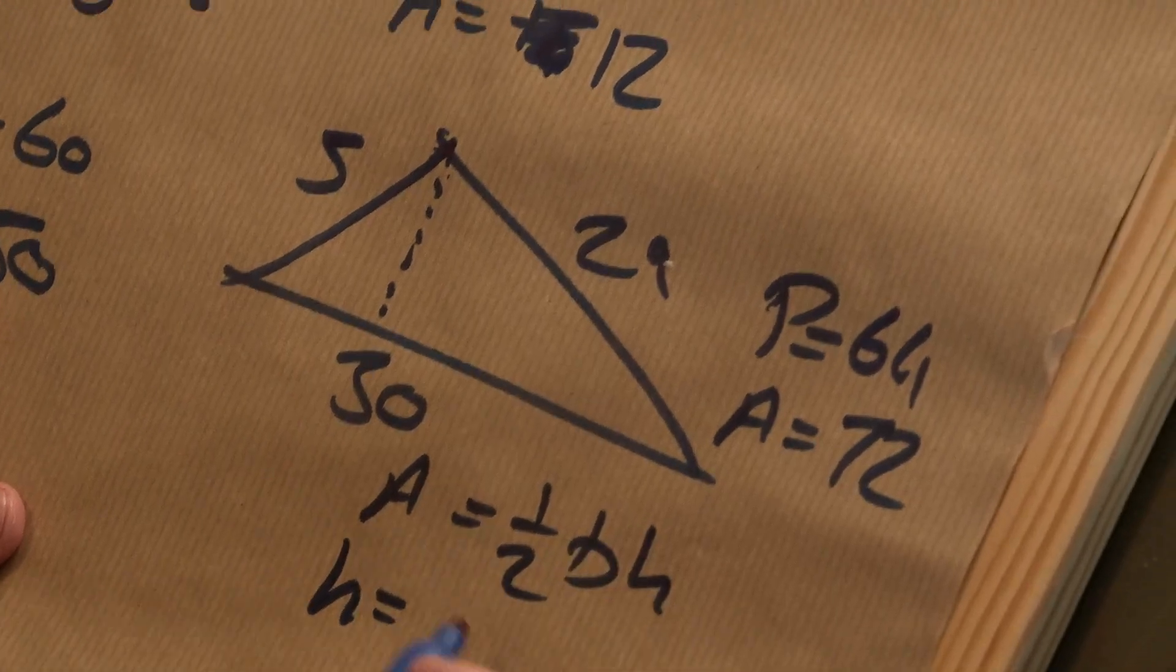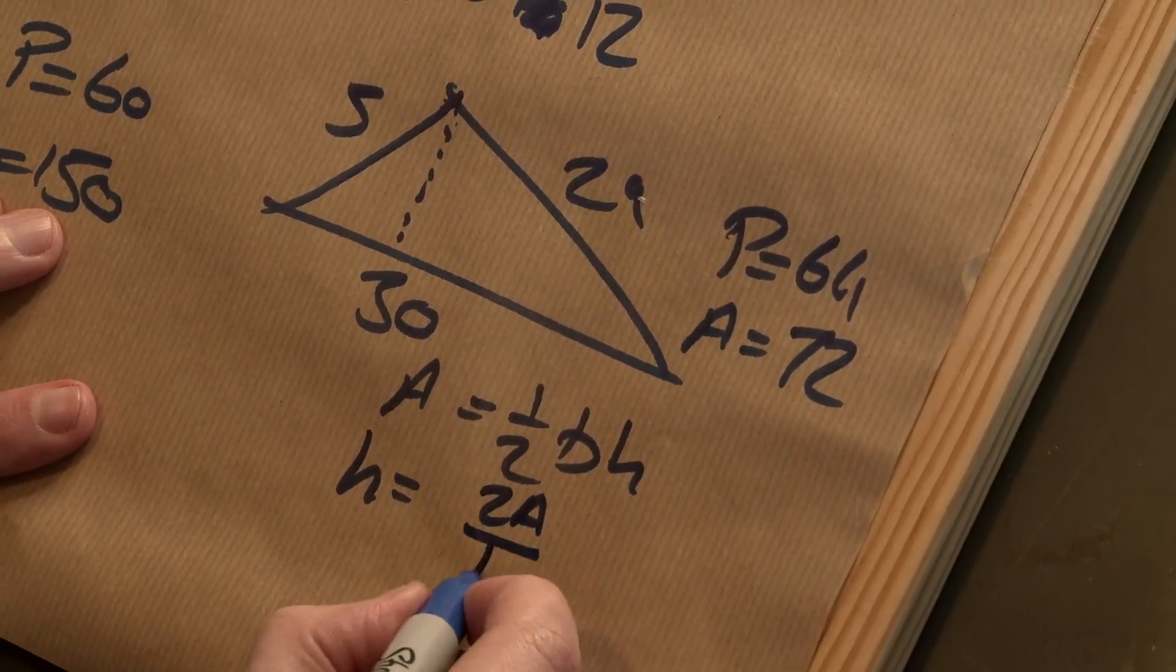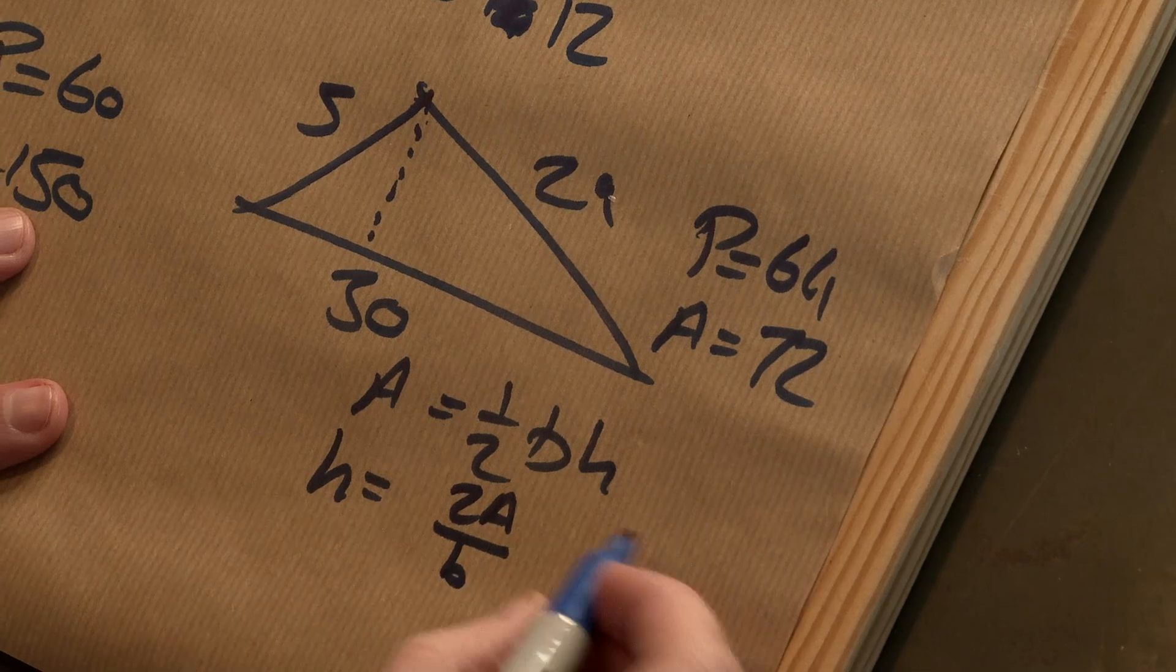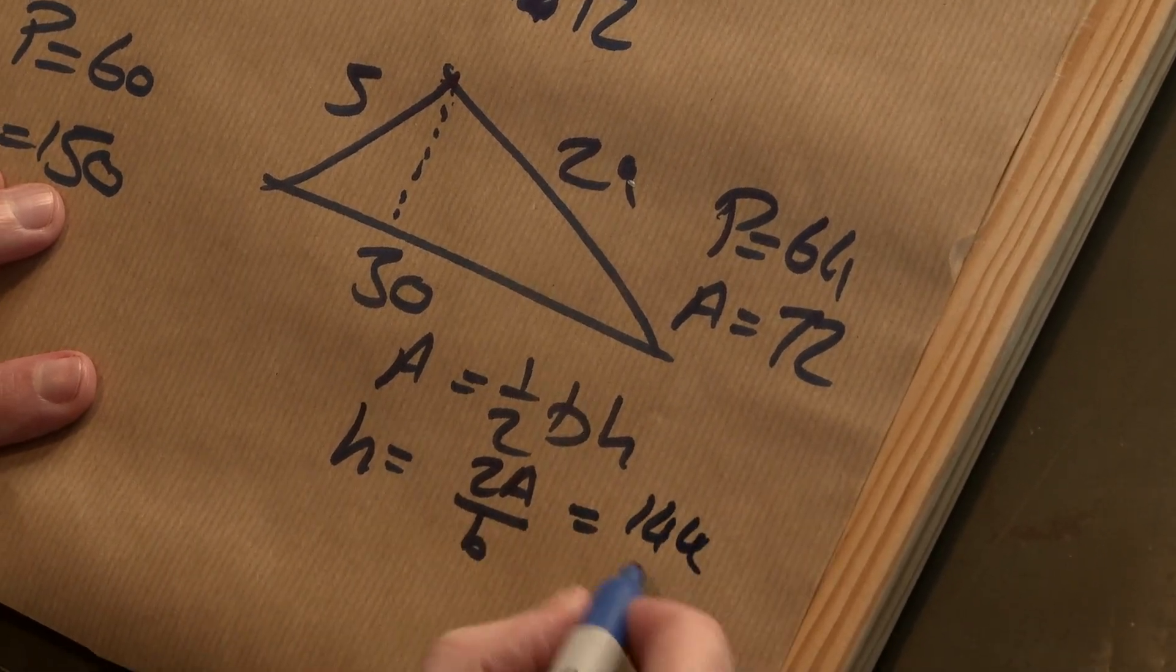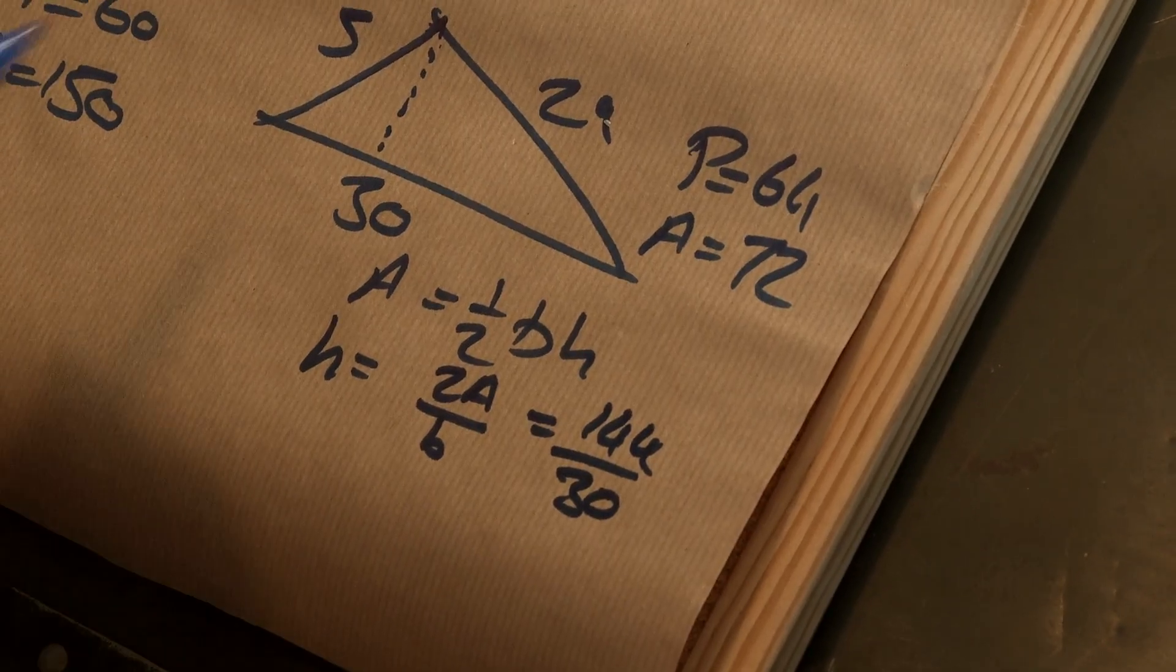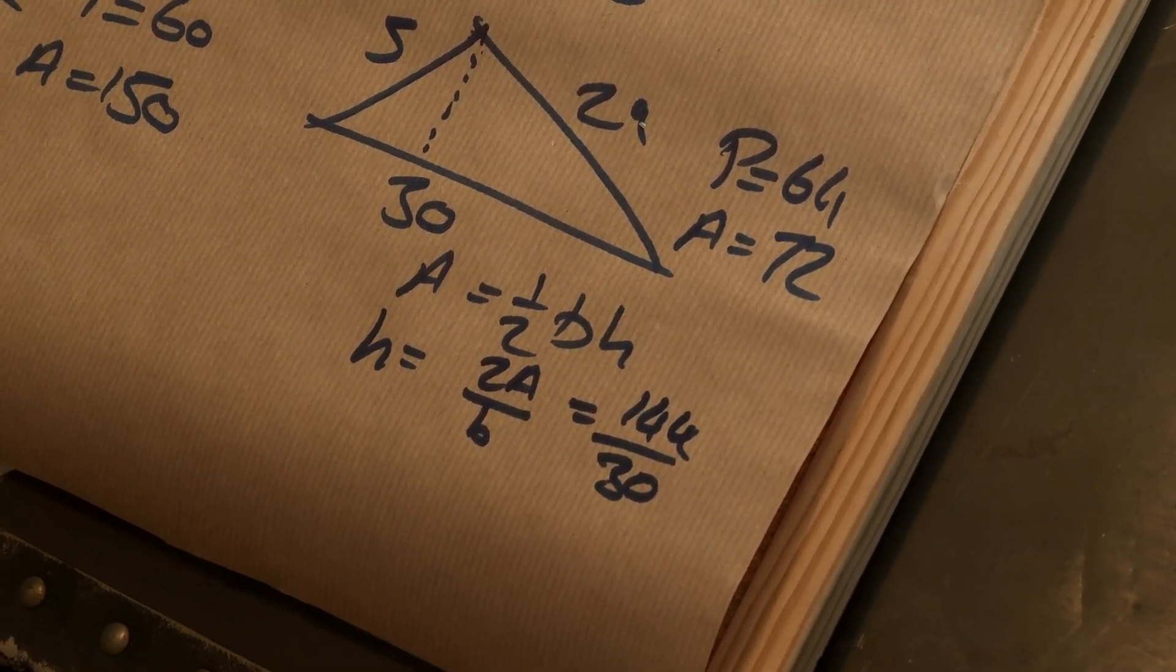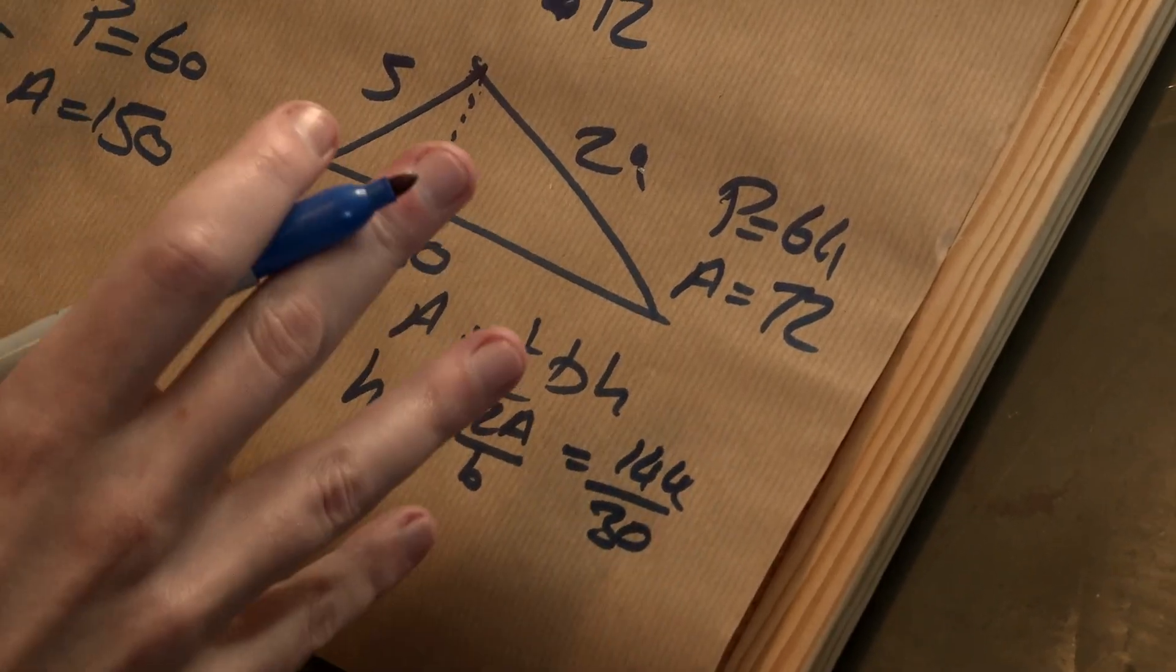So the height is going to be, well, twice the area divided by my base, which is 144 divided by 30, but it's not an integer. Which means it's not going to be a right-angled triangle with integer sides. When you get these, these are called the indecomposable ones. They're ones that you can't break up. You can break them up into right-angled triangles, and they're going to be rational-sided right-angled triangles, but not always integer ones.